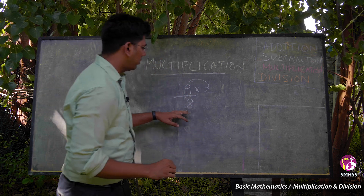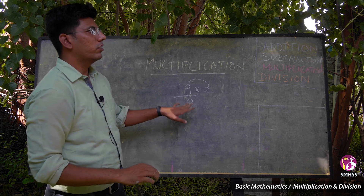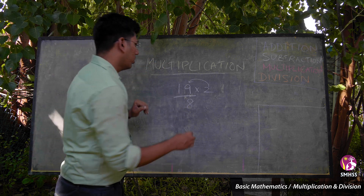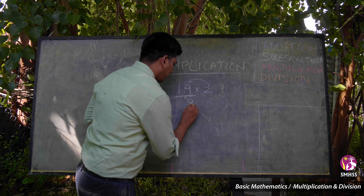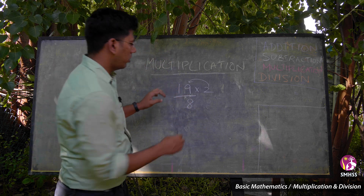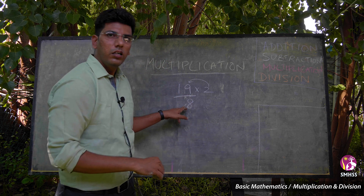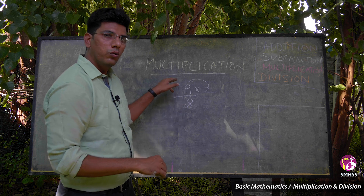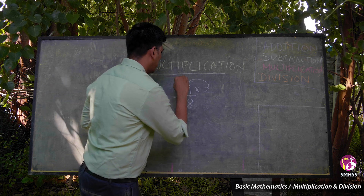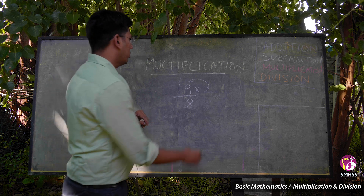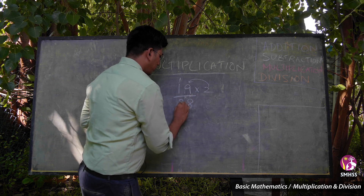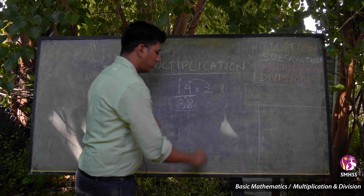Again, what you have seen in the previous video — the 1s, 10s and 100s. In 18, the 1 belongs to the 10s place. So I keep that here. Then 2 into 1 is 2, plus 3 carried over gives 38.